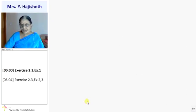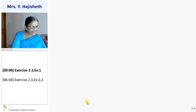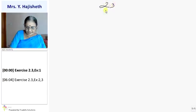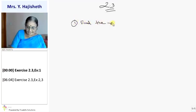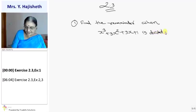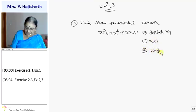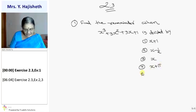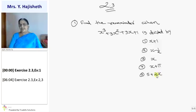Now we can do sums from Exercise 2.3 because it is totally based on the Remainder Theorem. The first sum is: find the remainder when x³ + 3x² + 3x + 1 is divided by many given divisors. First is x + 1, second is x − 1/2, third is x, fourth is x + π, and fifth is 5 + 2x. In every case, we are asked to find the remainder.